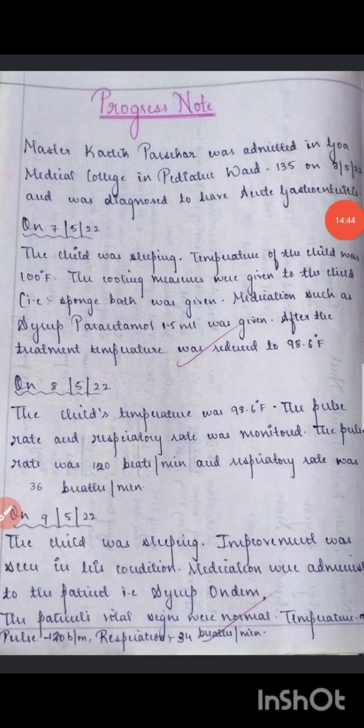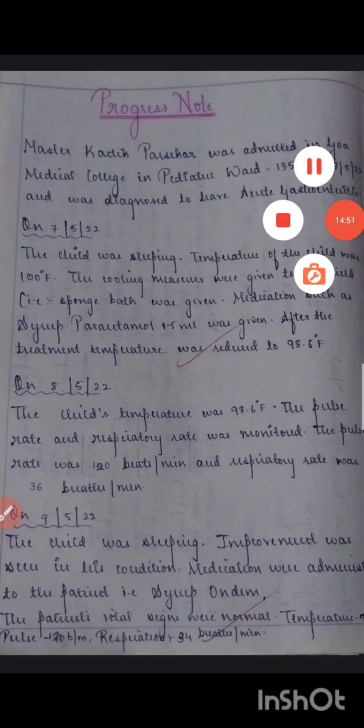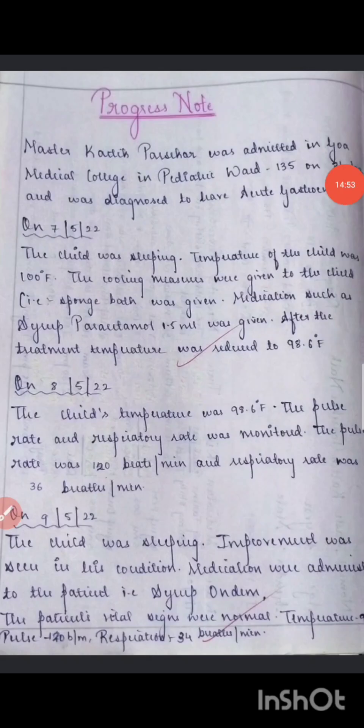Next comes the progress note. Write the progress note for a minimum of three days. On the first day, mention the child's condition and what medications were given. On the second day, note whether the condition improved or not. On the third day, document the current condition.